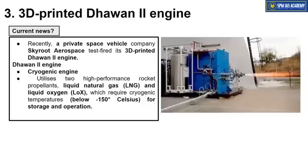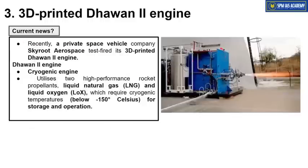In a cryogenic engine, the fuel or its oxidizer is stored at extremely low temperatures — somewhere close to minus 150 degrees Celsius — so that the fuel, which generally stays in gaseous form, turns into liquid. The fuel is Liquefied Natural Gas (LNG) and the oxidizer is Liquid Oxygen (LOX). They remain in liquid form only when stored at around minus 150 degrees Celsius. To handle LNG and LOX in liquid form, you need a cryogenic engine — which in this case is the Dhawan 2 engine manufactured by Skyroot Aerospace using 3D printing.